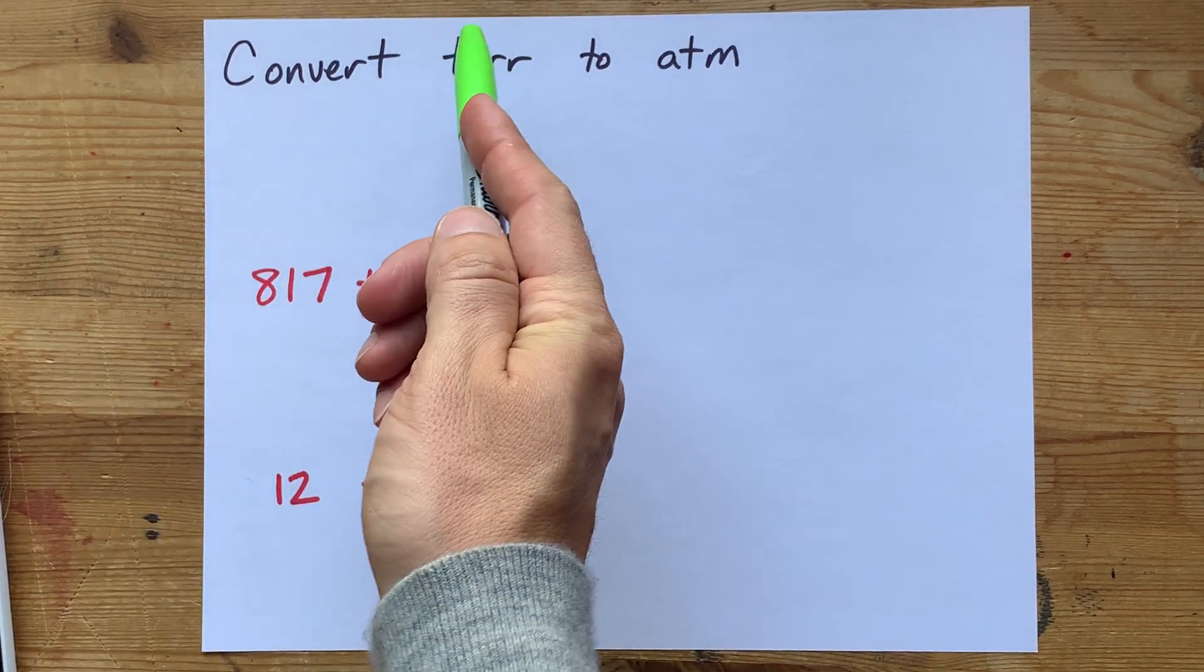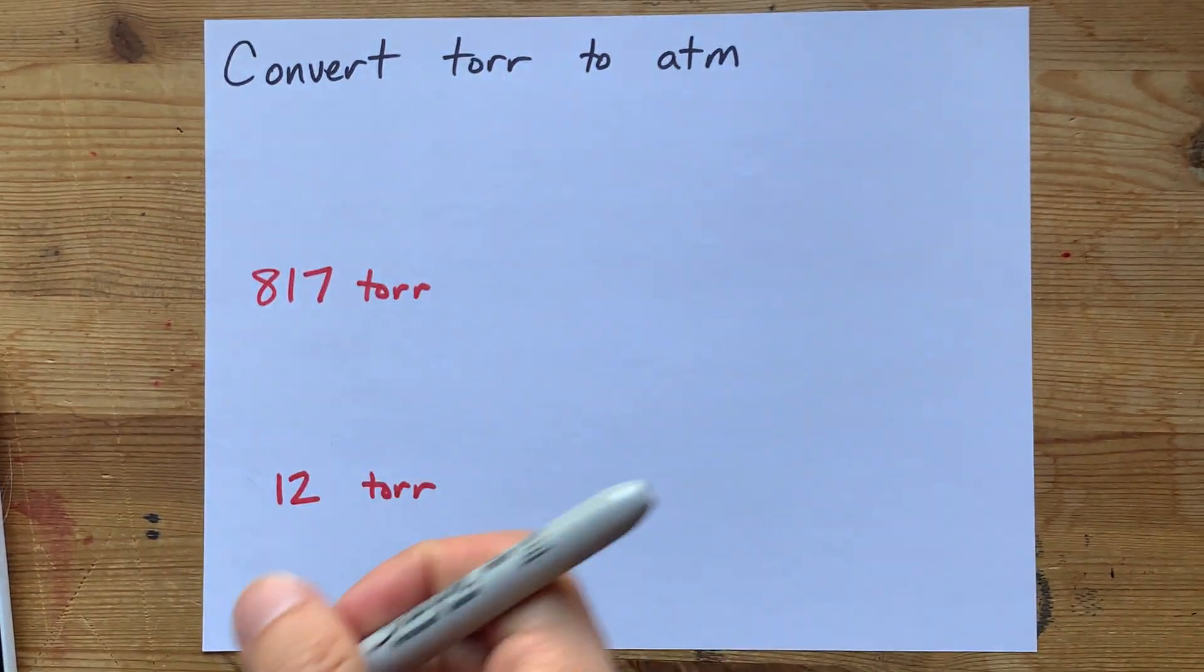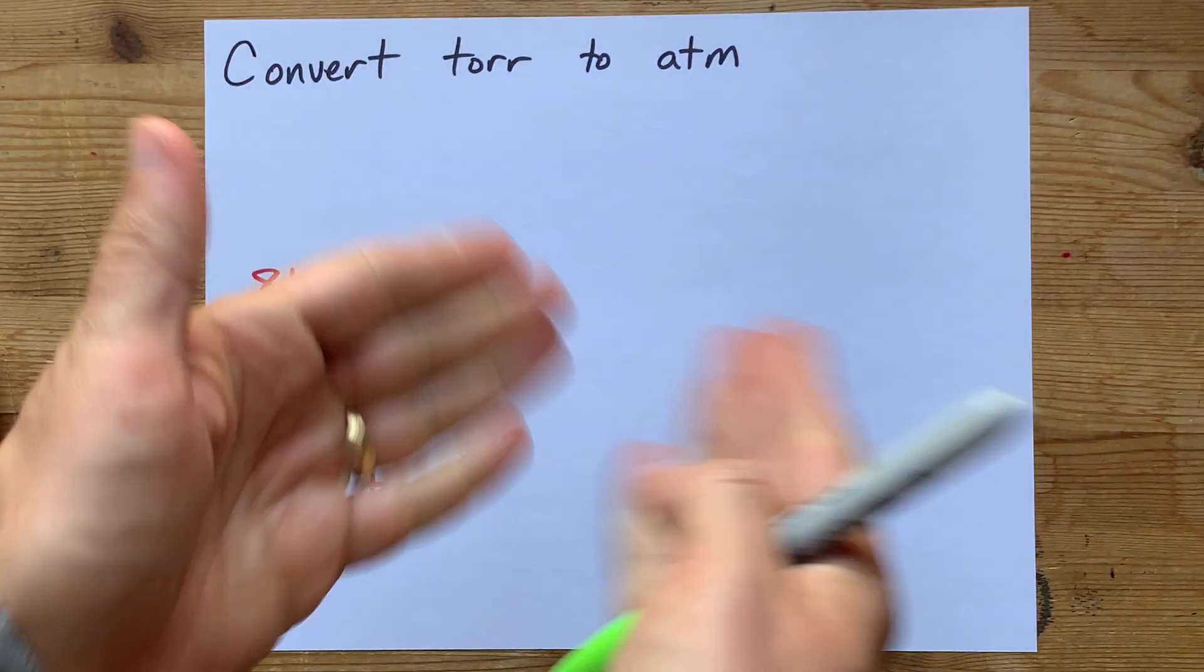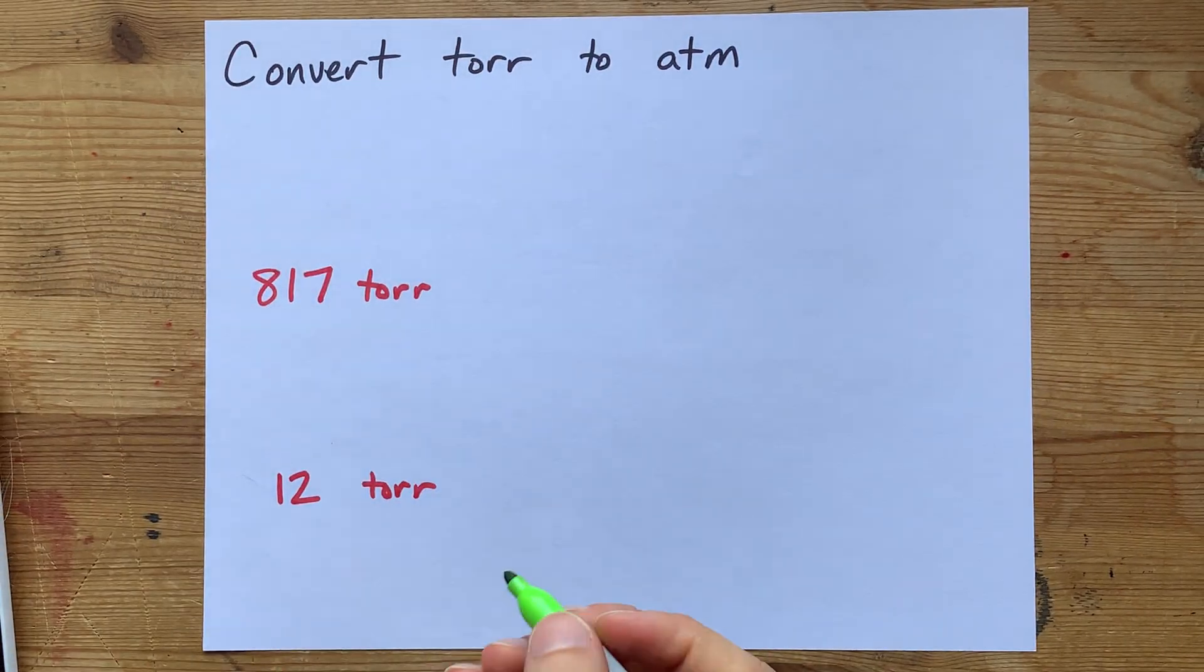How do you convert torr units to atmospheres? The short answer is divide by 760.